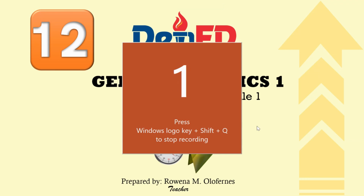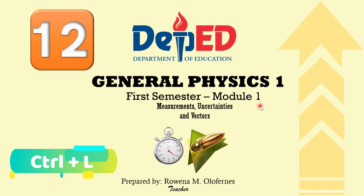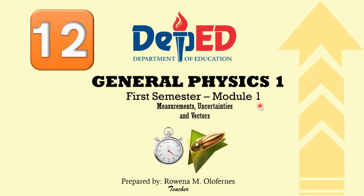Hello there, I am Mrs. Rowena Olufurnas. Today I'll guide you for Module One for our topic, General Physics 1. Something like that. Now, as you can see, there's a laser pointer. To create the laser pointer, press Ctrl+L on your keyboard. Again, Ctrl+L to show the laser pointer, and click Ctrl+L again to make the pointer disappear.